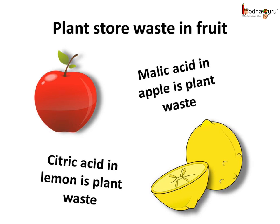So we see, some plants store the waste in the fruit, and a fruit falls down from the tree once it is ripe.